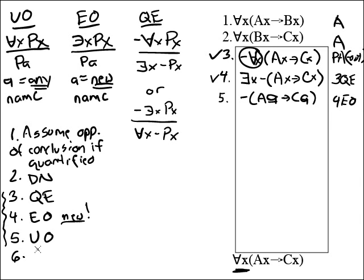And so that's going to be 4EO. In fact, our whole, the sequence of the rules down here is motivated by the fact that we want to do the existential out early on so we can get these new names into our proof.